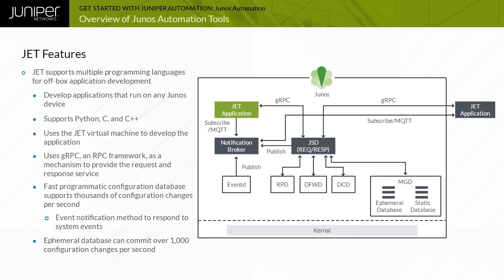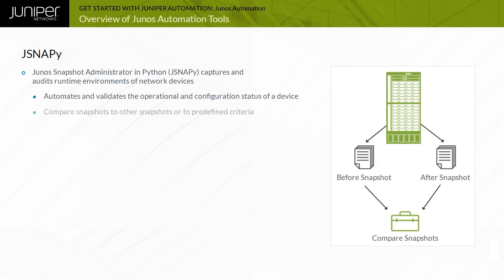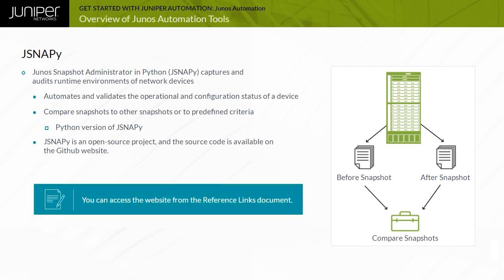The ephemeral database can commit over 1,000 configuration changes per second. To reach this magnitude of commits per second, commits are not validated. This means you need to ensure that the app is pushing a valid configuration. Junos Snapshot Administrator in Python or JSnappy captures and audits runtime environments of network devices running Junos OS. It automates network state verification by capturing and validating the status of a device. It takes pre-modification and post-modification snapshots and compares them based on provided test cases. JSnappy can also audit the runtime environment of a device against predefined criteria. JSnappy is an open-source project, and the source code is available on GitHub.